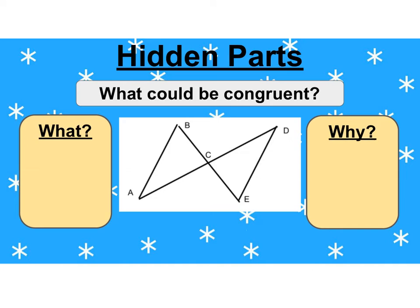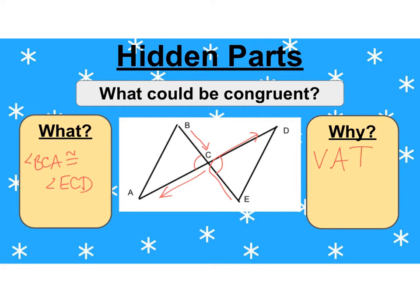Here we have another picture that's not marked — I call this the bow tie picture. If we look at the angles in the middle, remember we can't just call it angle C; I have to use all three letters because there are multiple angles at C. We have vertical angles right in the middle, and those are congruent to each other. Going down the short side then along, angle BCA is congruent to angle ECD. The reason is the vertical angle theorem. Always be on the lookout for vertical angles.